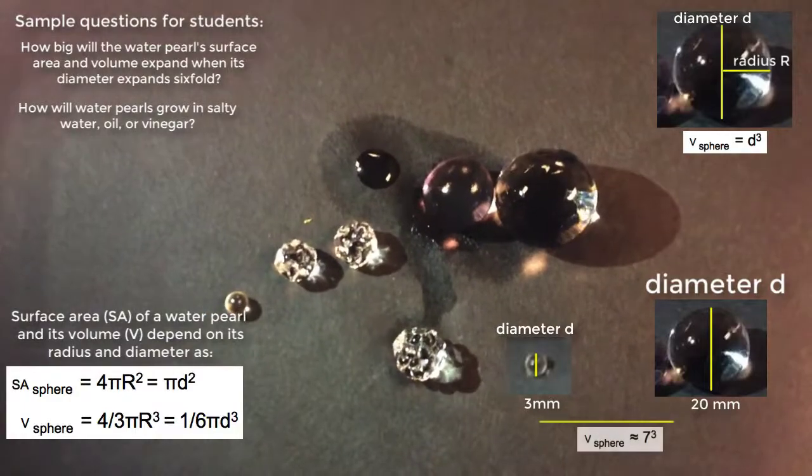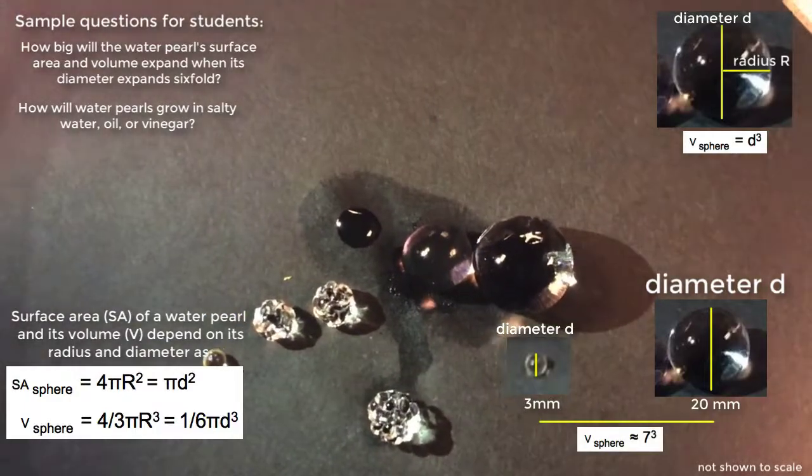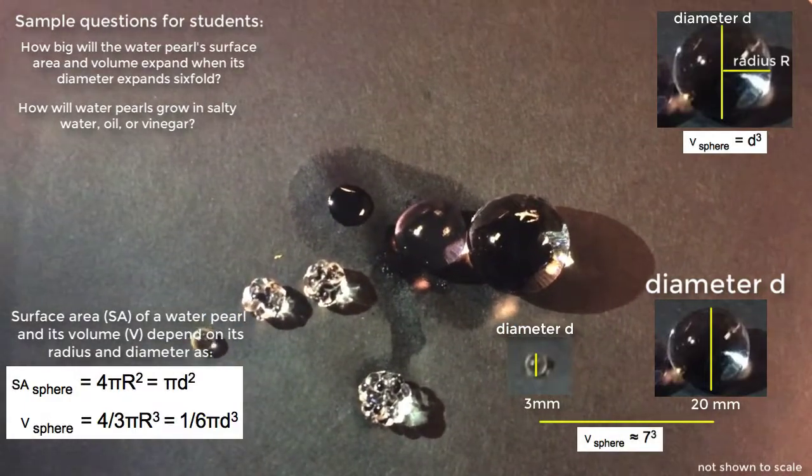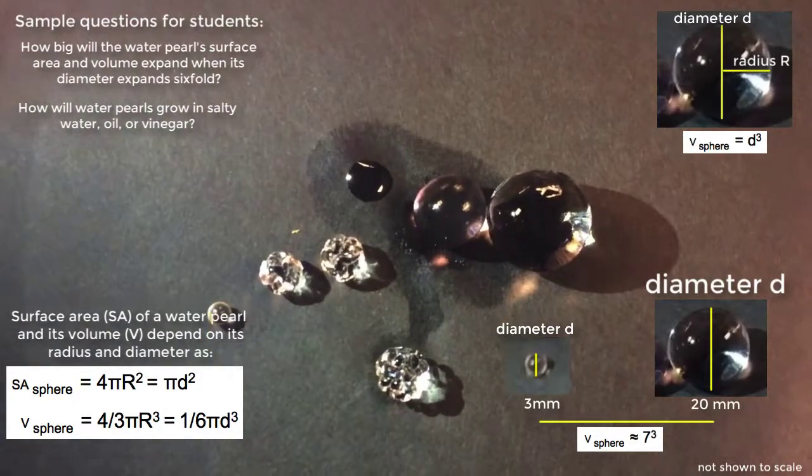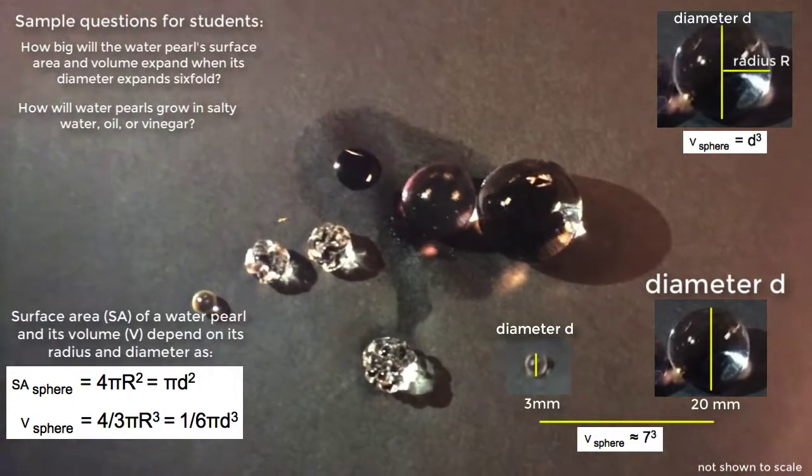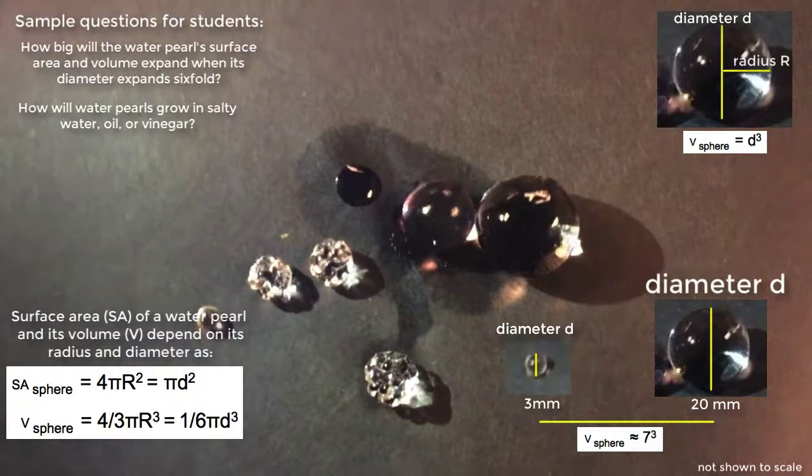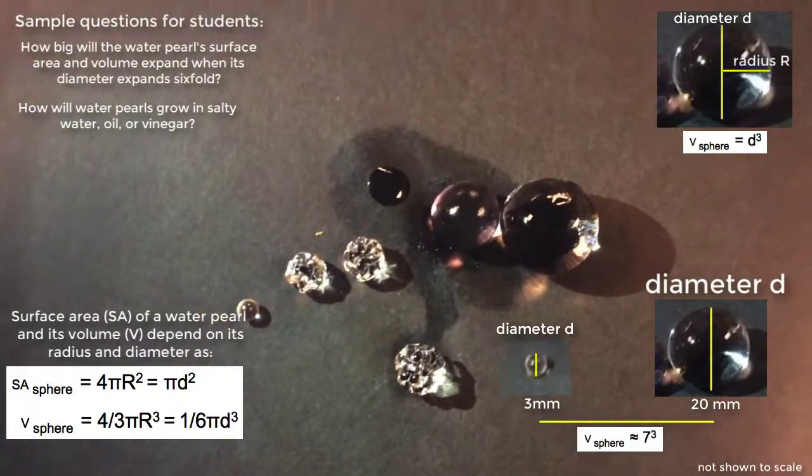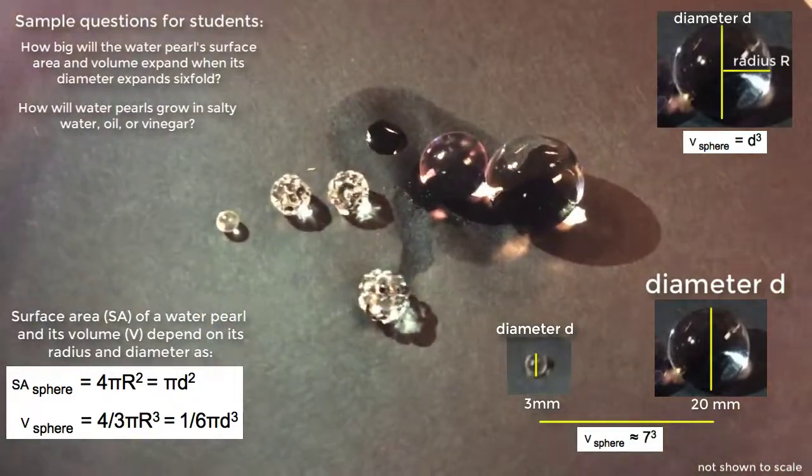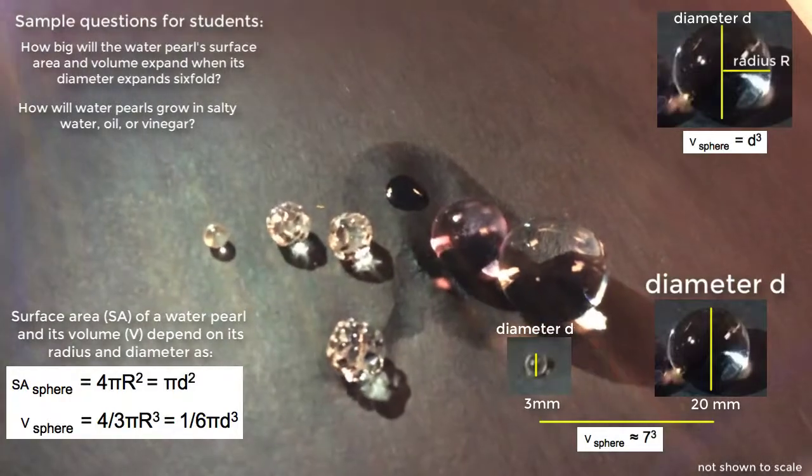the volume is going to be, the ratio of volumes is going to be seven to the cube, to the power of three, which is more than 200. So the volume of the fully grown bubble is 200 times more than the volume of the tiny bubble, which is really cool.